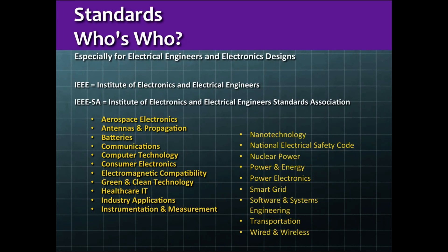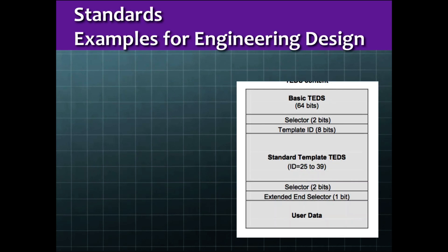Beyond these clearinghouses for national and international standards, trade organizations often provide an excellent suite of standards relevant to particular fields. For example, the Institute of Electronics and Electrical Engineers, or IEEE, provides standards for not only electrical systems but electromechanical systems across a wide range of topics and product designs. Other trade organizations specifically relevant to engineering include the American Society for Mechanical Engineers, or ASME, and the American Society of Civil Engineers.